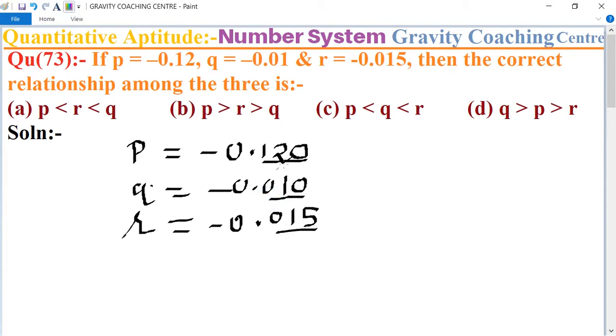For negative numbers, the bigger absolute value is the smaller number. So -10 is the greatest, meaning Q is greater than R and P.